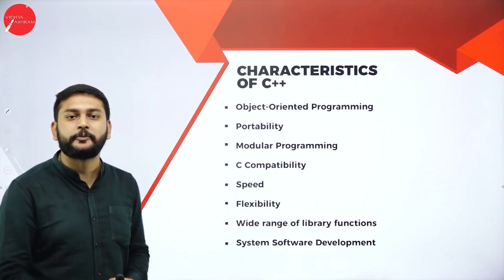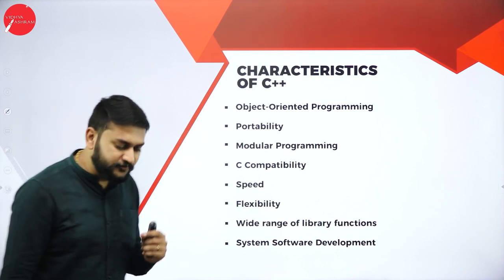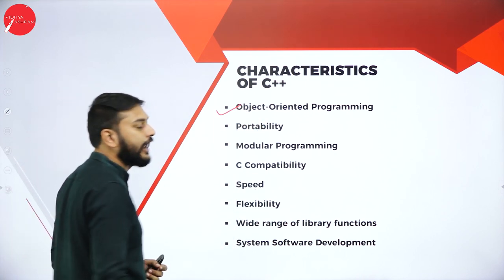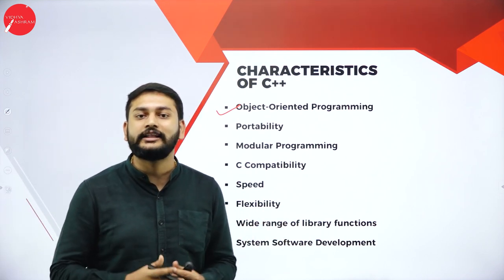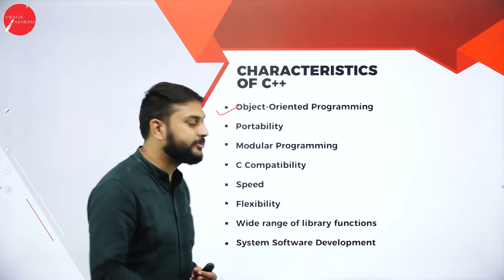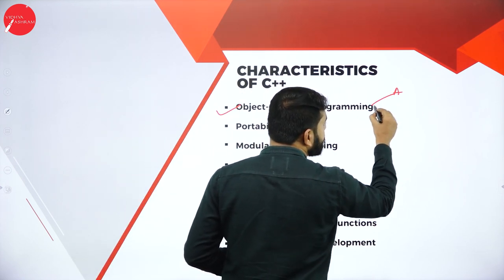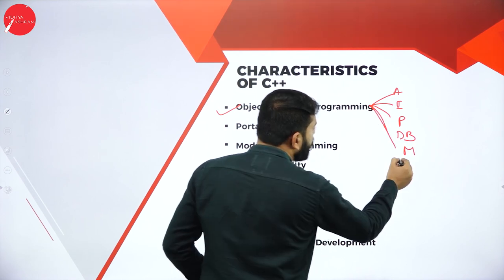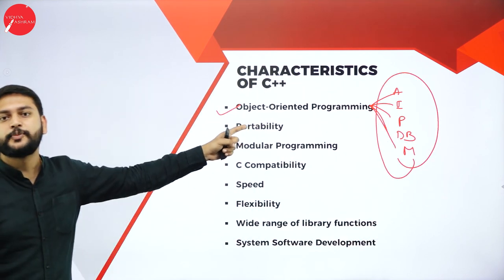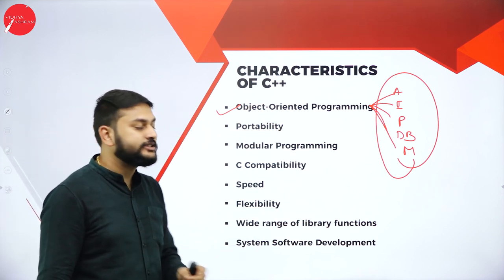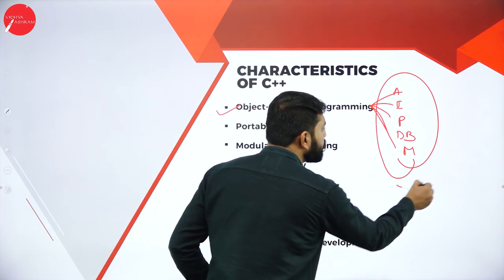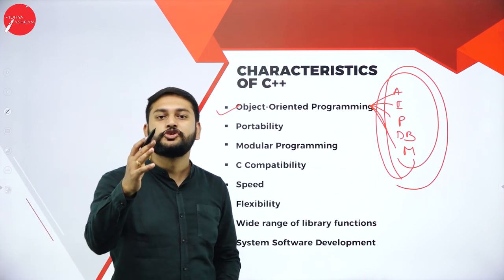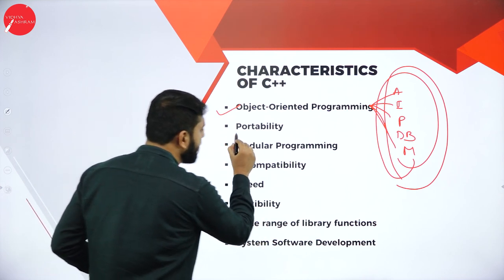Moving on to the first and most important topic: characteristics of C++. The first characteristic is object-oriented programming. C++ supports abstraction, inheritance, polymorphism, data binding, and message passing — all the features of object-oriented programming. The second characteristic is portability: if you write a C++ program, you will be able to execute it on all machines — Windows, Linux, or iOS (Mac). There is no machine dependency.